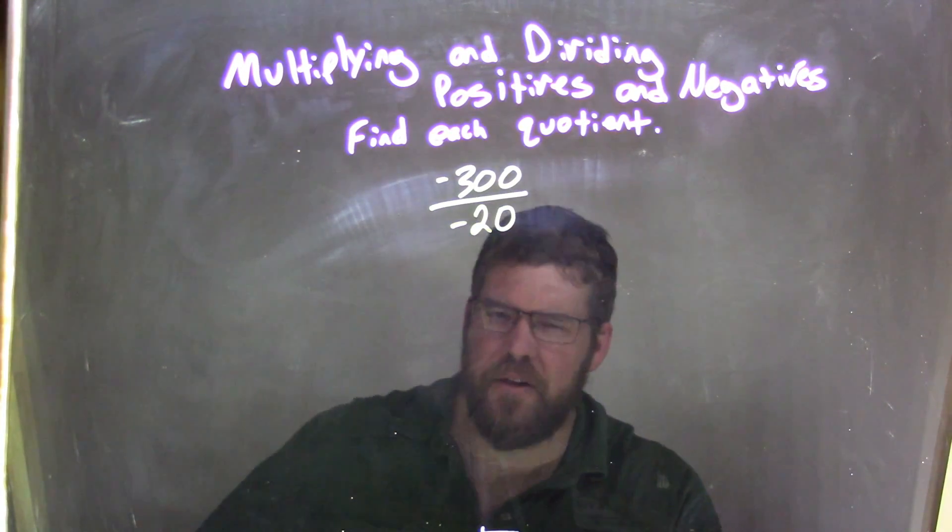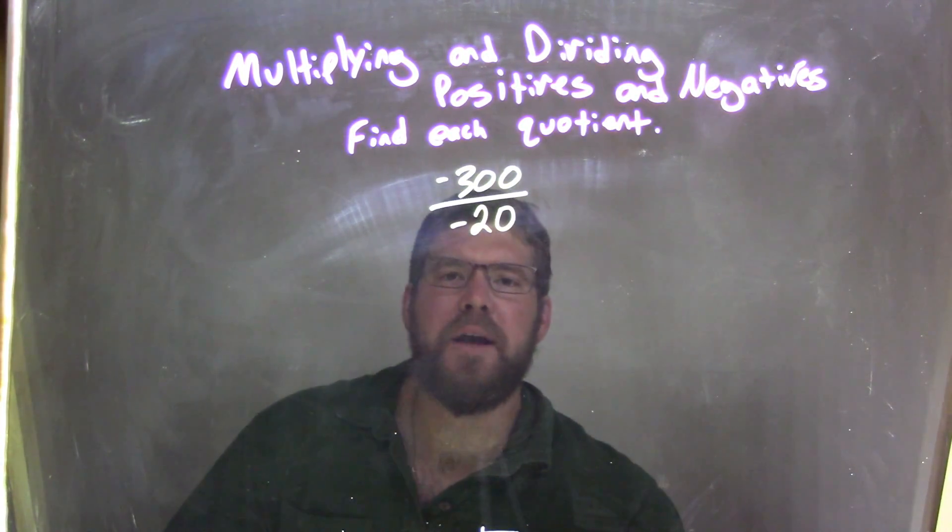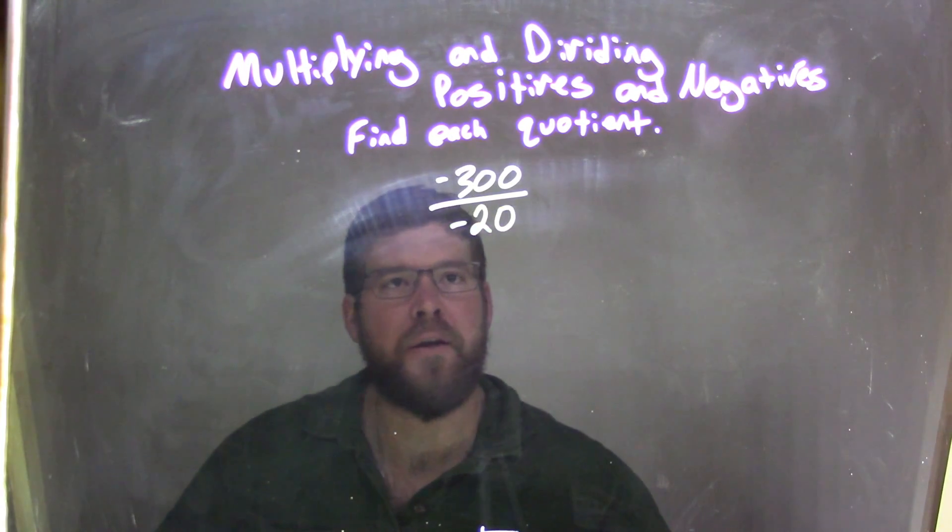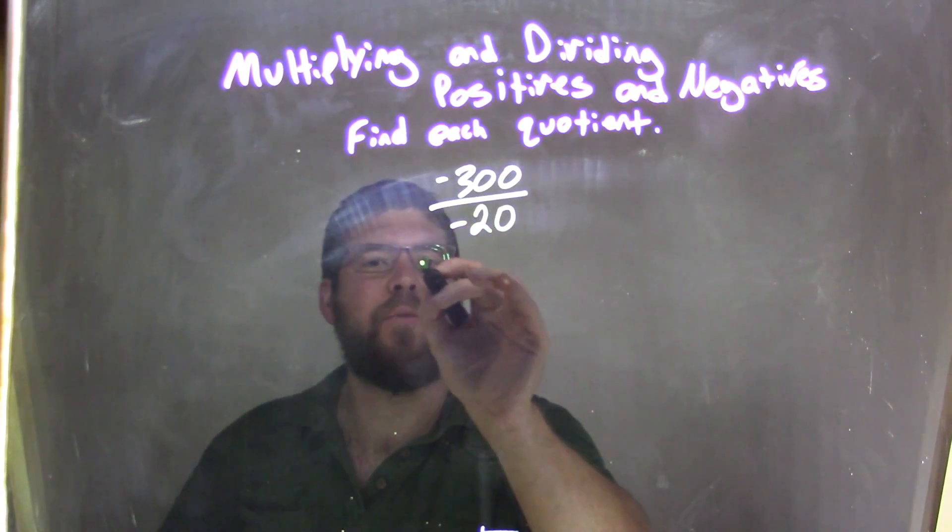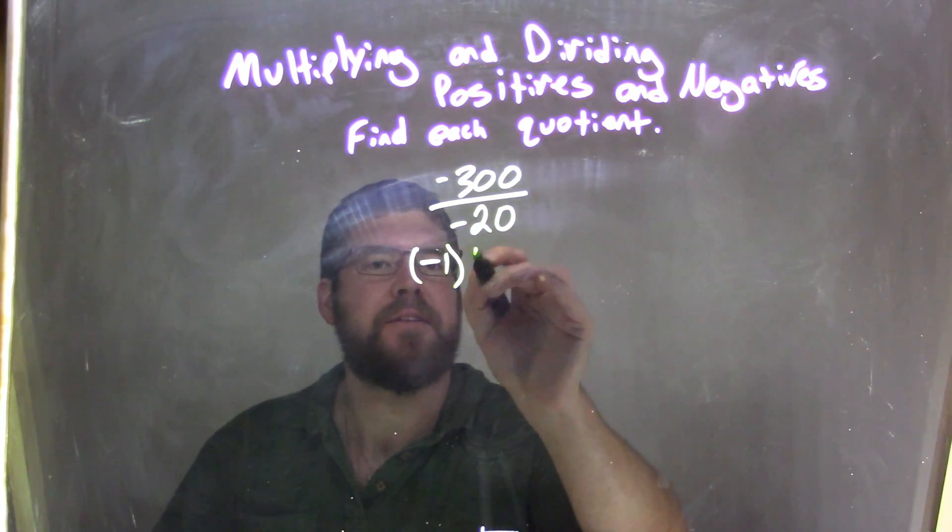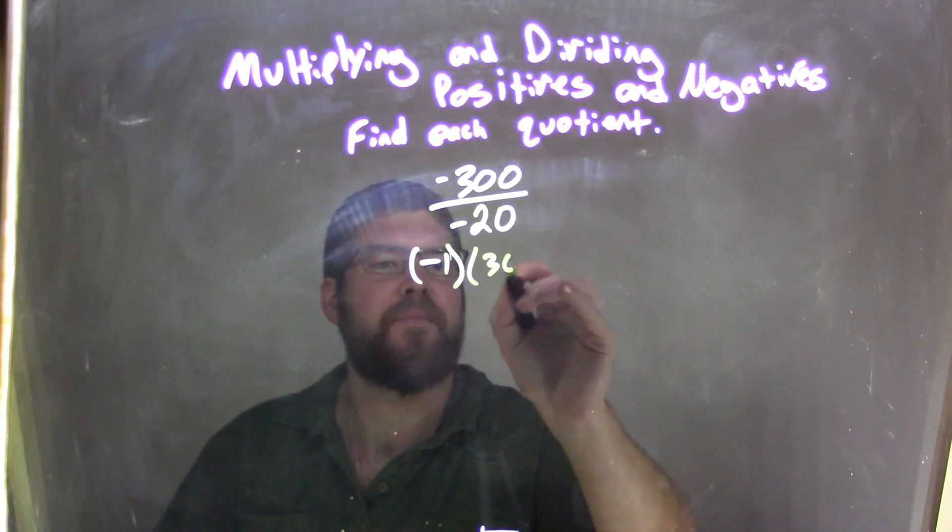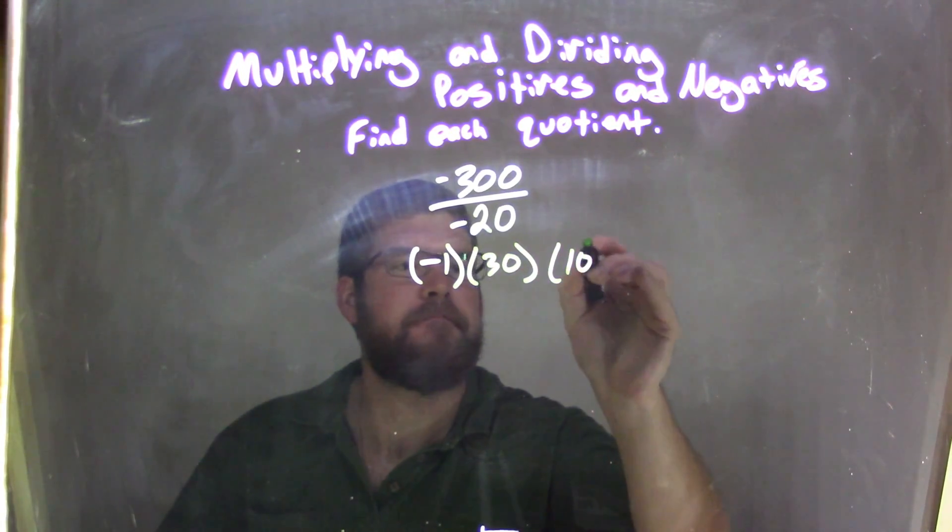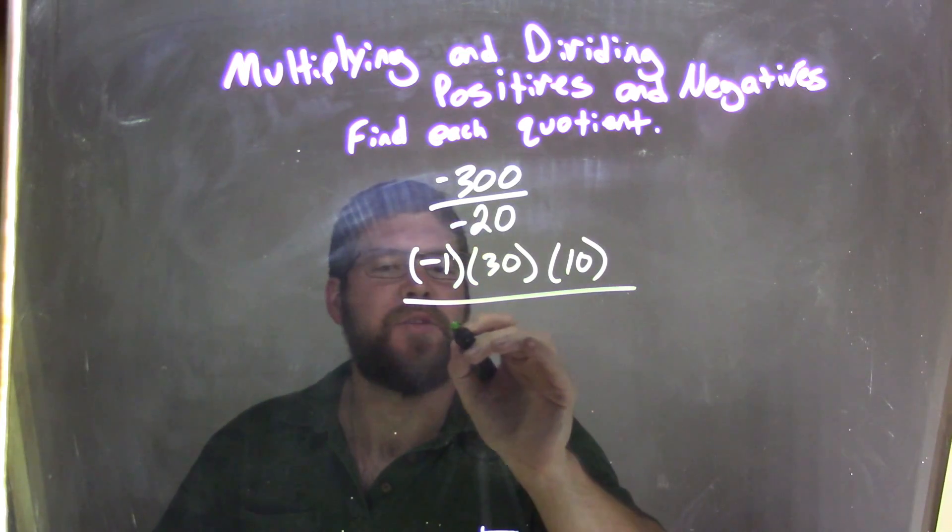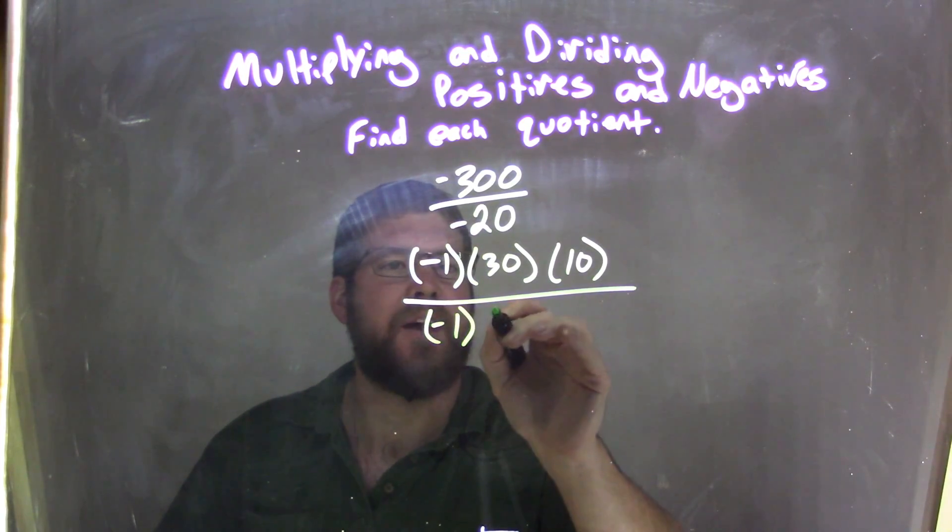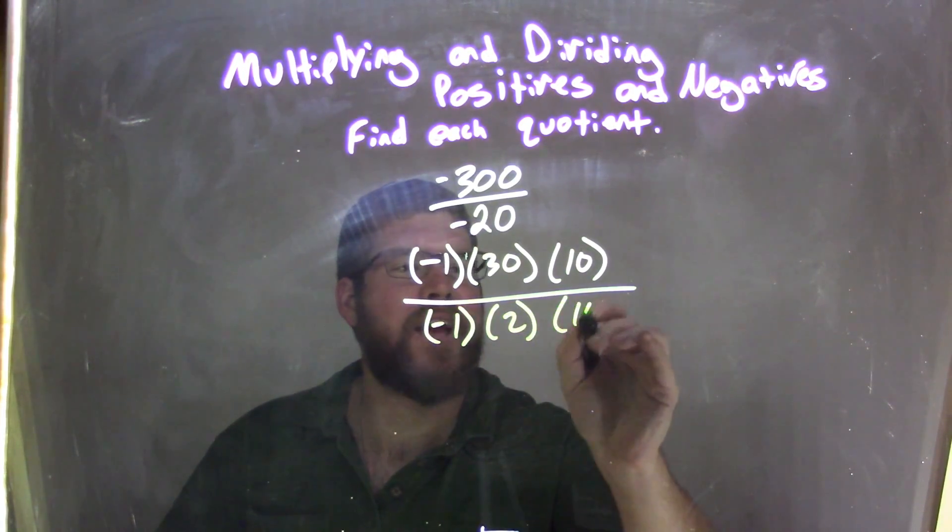Well, I'm going to break this down a little differently. I'm going to break it down, the numerator to just be negative 1 times 30 times 10, and the denominator to be negative 1 times 2 times 10.